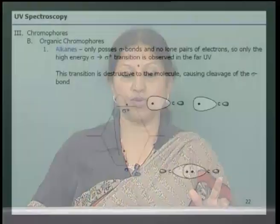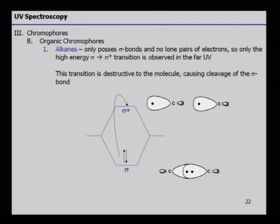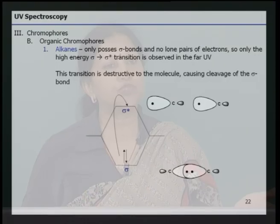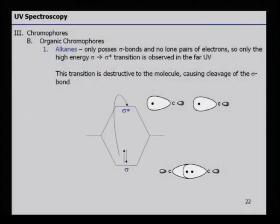An organic chromophore that is an alkane does not contain any chromophoric group and therefore is not analyzed by the UV spectrum. Alkanes only possess sigma bonds and no lone pairs of electrons, so only the sigma to sigma* transition is observed, and that is in the far UV. Far UV is not the routine study in the lab. This transition is destructive to the molecule, causing cleavage of the sigma bond, which only occurs at very high temperature — not in the region of UV energy.